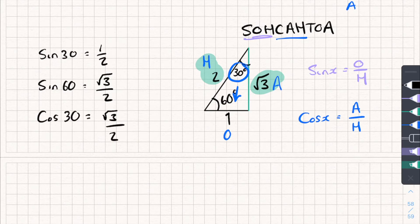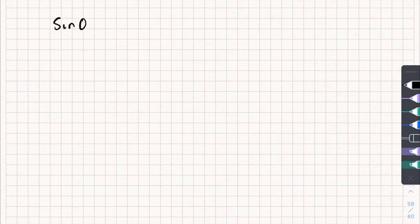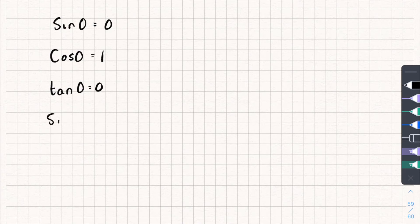These two triangles cover the majority of the values. There are five more to remember: sine 0 equals 0, tan 0 equals 0, sine 90 equals 1, and cos 90 equals 0. You could just practice these until you know them, or the way I'd do it is by drawing their graphs.